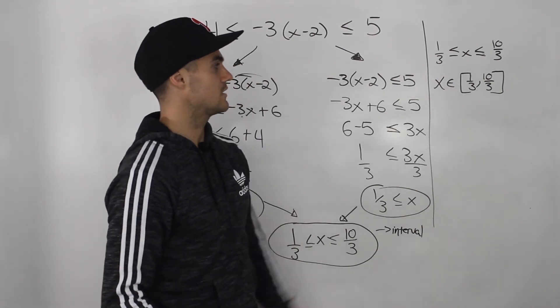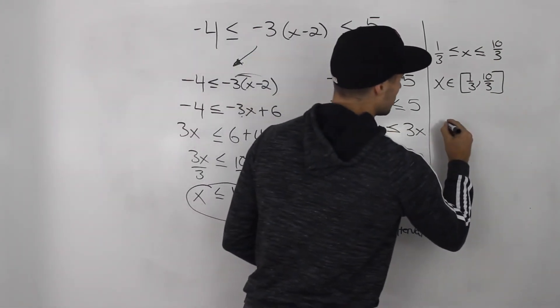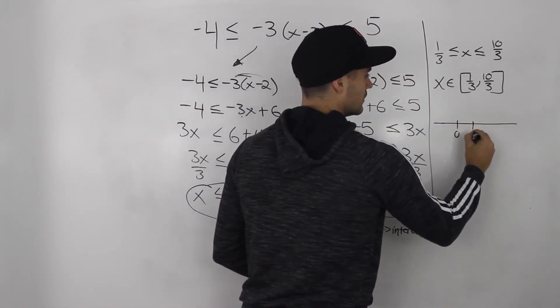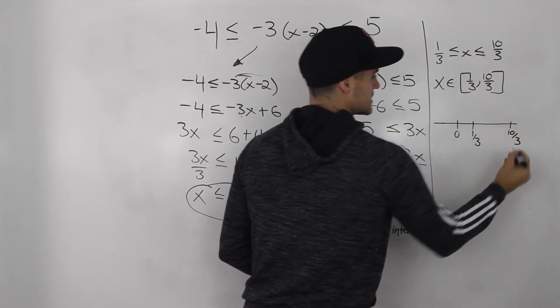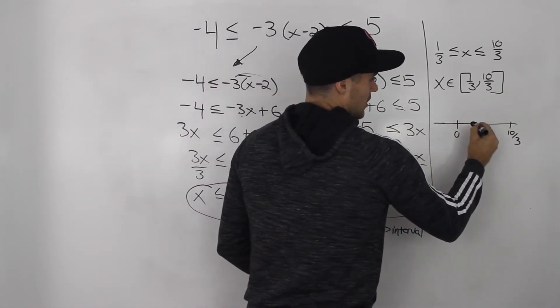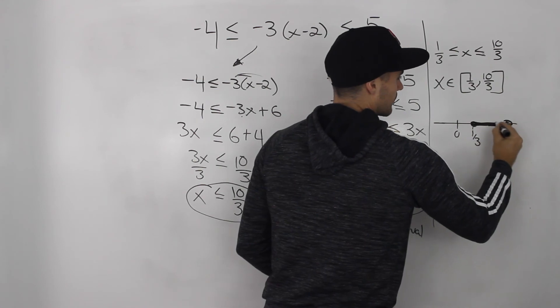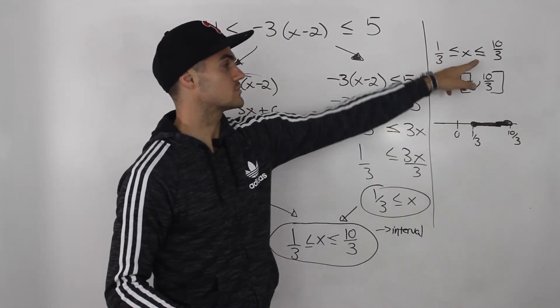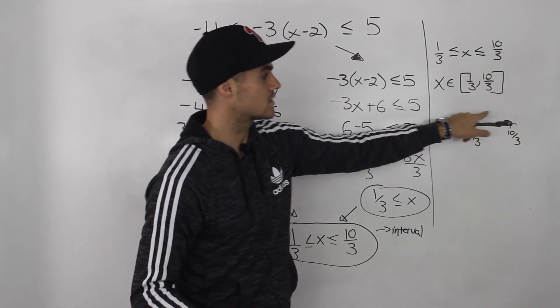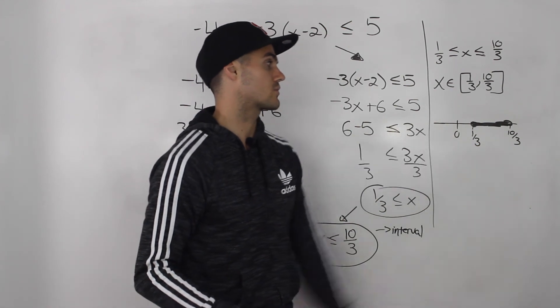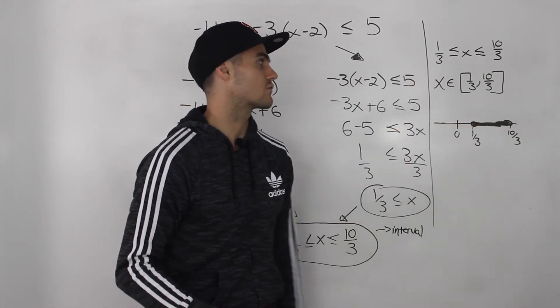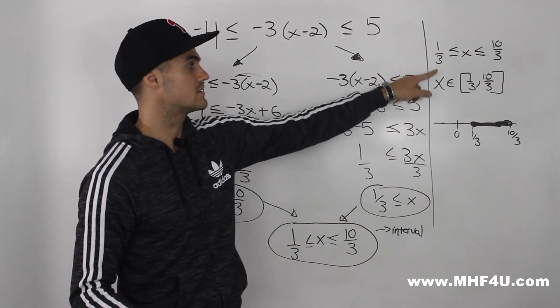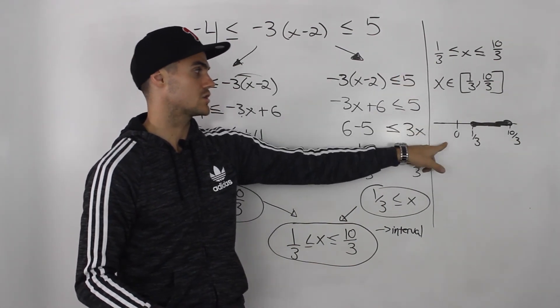So interval notation, set notation, and then you can also show this solution on a number line. So if we have a number line, let's say here the value is 0, 1 over 3, 10 over 3, and then it's all of the x values in between those. And notice because it's inclusive of the 1 over 3 and the 10 over 3, we shade those values in. Again, if those equal signs weren't there, these would be circle brackets and then these here would be open dots because it wouldn't be inclusive of 1 over 3 and 10 over 3. But because it is, those dots are filled in. So this double inequality, we got this solution and there are three different ways to show it. Interval notation, set notation, and a number line.